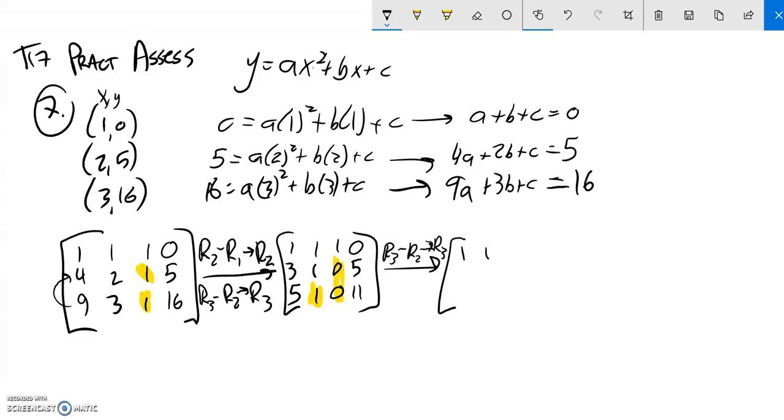So my first row doesn't change at all. My second row is going to stay as it was. And now 5 minus 3 is 2. 1 minus 1 is 0. 0 minus 0 is 0. So 11 minus 5, that is a 6. So now notice what I have.